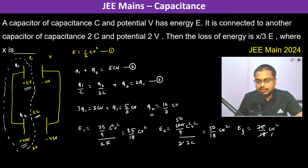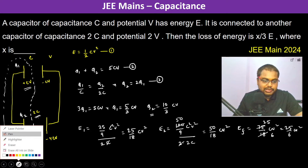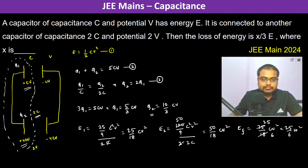Simplifying 75/18 gives 25/6, so the final energy is 25/6 CV².